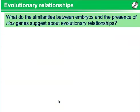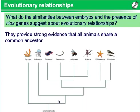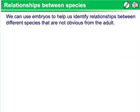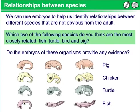Evolutionary relationships. What do the similarities between embryos and the presence of Hox genes suggest about evolutionary relationships? They provide strong evidence that all animals share a common ancestor. We can use embryos to help us identify relationships between different species that are not obvious from the adult.